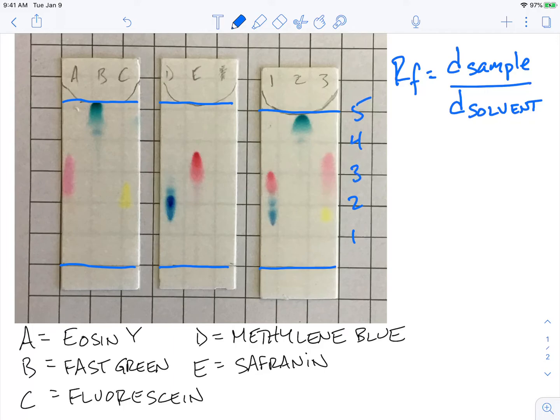So our solvent front is really close to about five centimeters for all of them. It is important to note that in the first two plates, the one on the left in the middle, it is a little bit higher. So you do want to calculate your RF values for each plate.